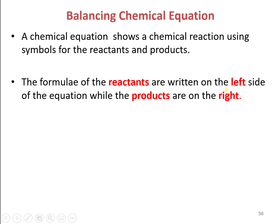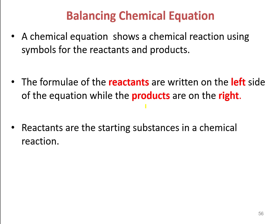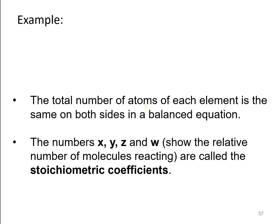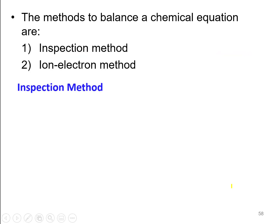The formula of the reactants are written on the left side of the equation while the products are on the right side. Reactants are the starting substances in the chemical reaction, while products are substances formed as a result of the reaction. For example, x moles of A reacts with y moles of B to produce z moles of C and w moles of D. The total number of atoms of each element is the same on both sides in a balanced equation. The numbers x, y, z, and w show the relative number of molecules of reactants and products and are called stoichiometric coefficients.